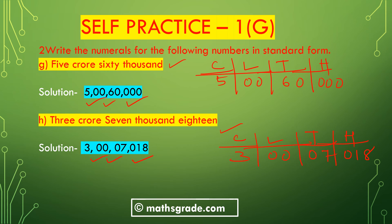In the Indian system of numeration we place 2 digits after each comma in the crore place, 2 digits after comma in the lakh place, 2 digits after comma in the thousand place, and 3 digits after comma in the hundred place. In the international system of numeration we place 3 digits after comma in the billion place, 3 digits after comma in the million place, 3 digits after comma in the thousand place, and 3 digits after comma in the hundred place.